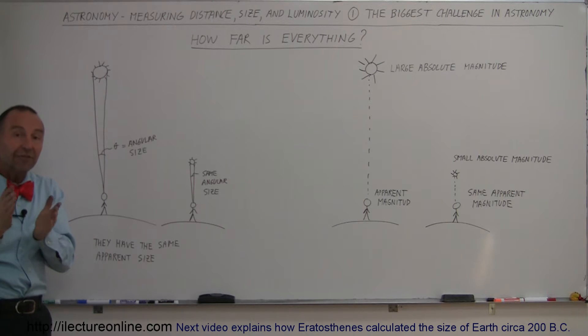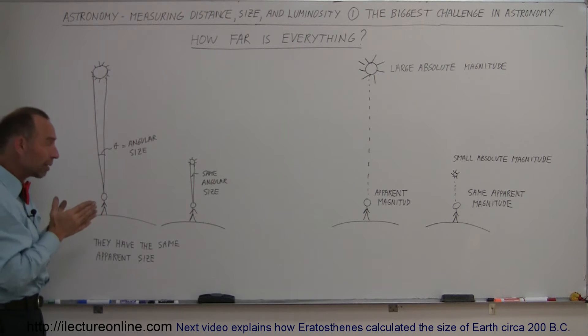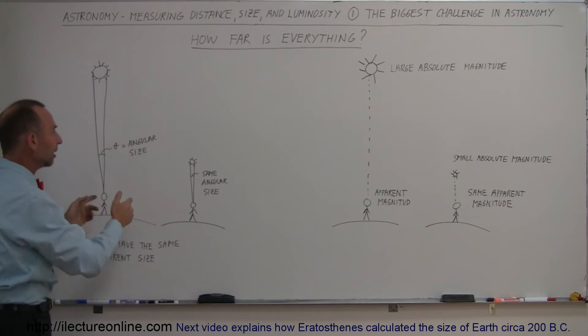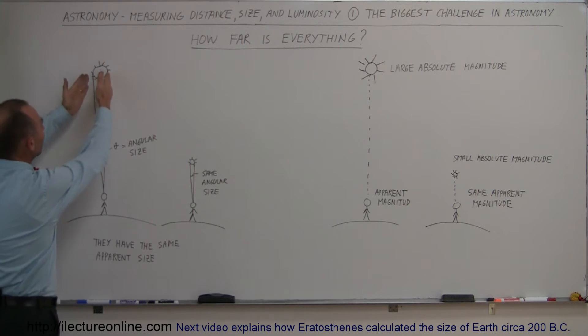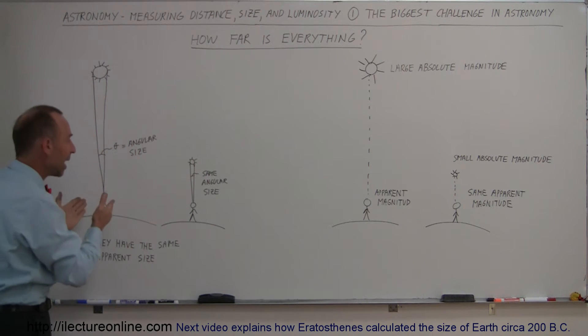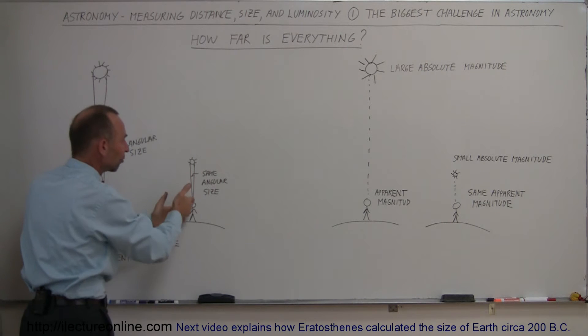But we won't know actually if the object is really big, or if the object is really small, because we don't know how far away the object is. In this case, notice that this object, even though it's much bigger, has the same angle. It uptends the same angle as the smaller object that's much closer.